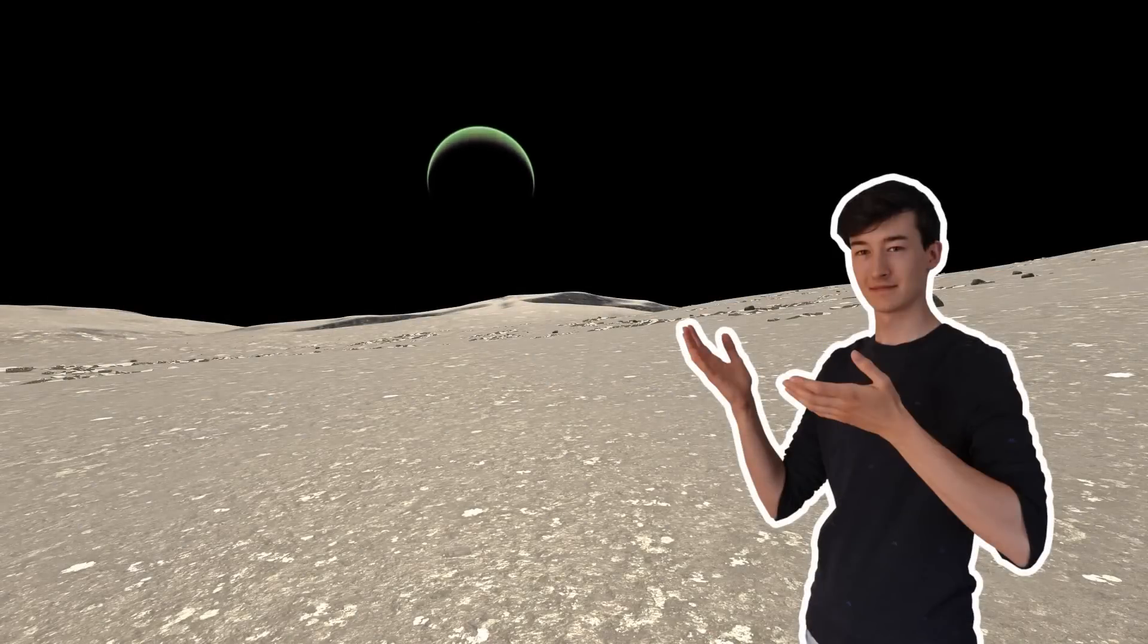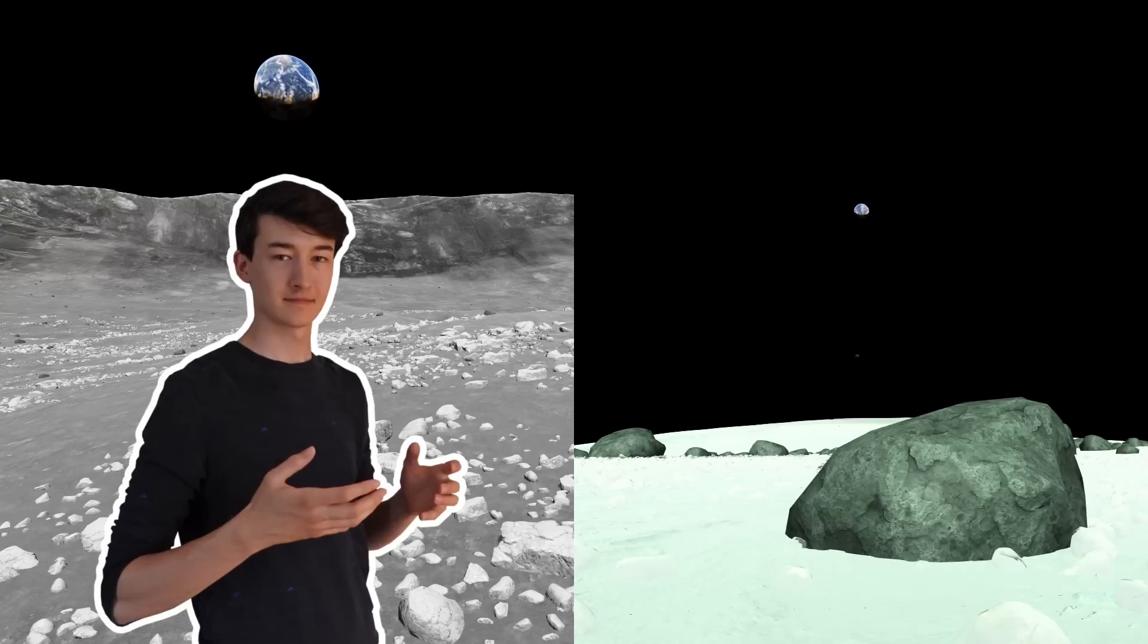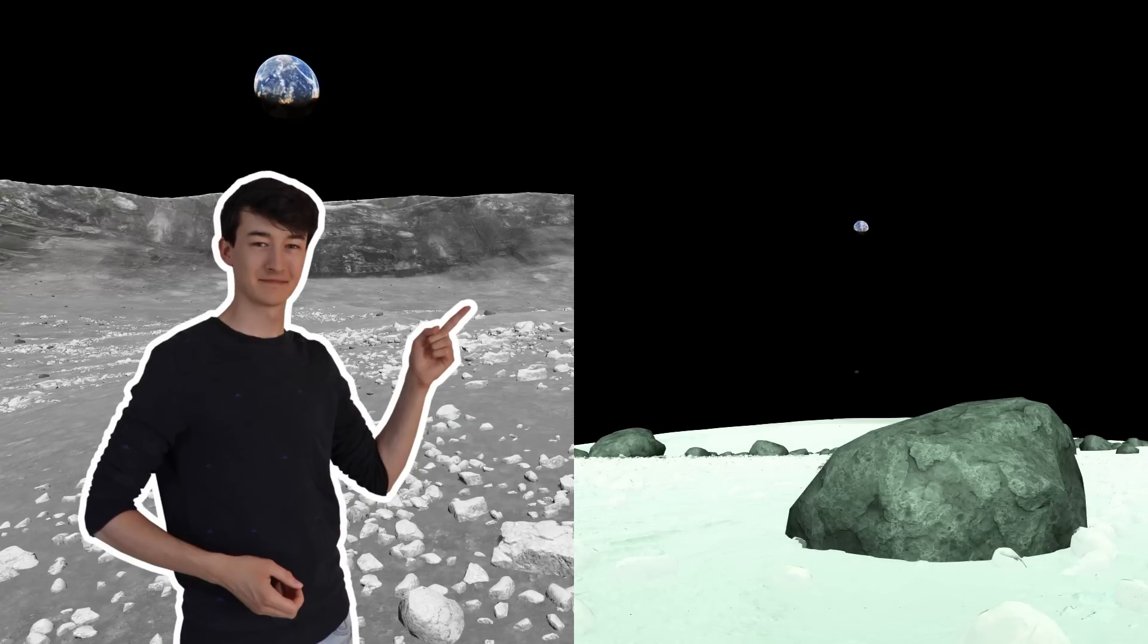When you land on a celestial body in KSP and you look up, you might see another celestial body depending on where you just landed. Here we see Kerbin as seen from the Mun, and here we see Minmus. Can you see the difference? And I'm not talking about size, but that is also indeed different.